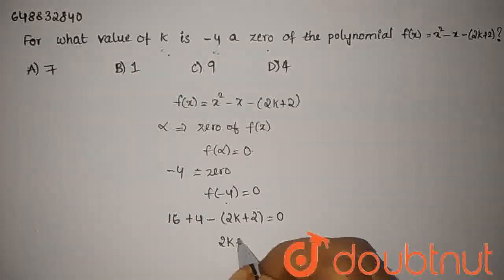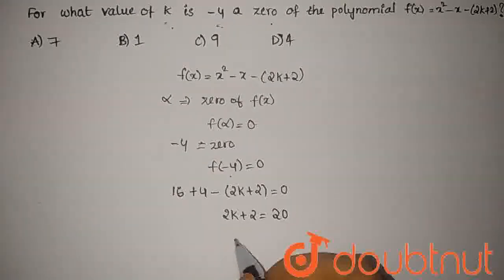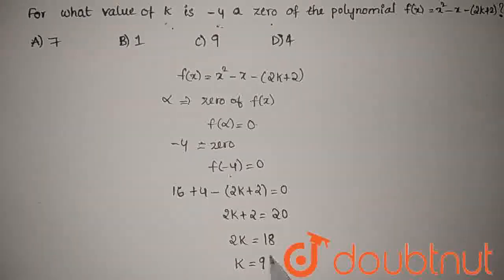2k plus 2 equals 20. 2k equals 20 minus 2, which is 18. Therefore, k equals 9.